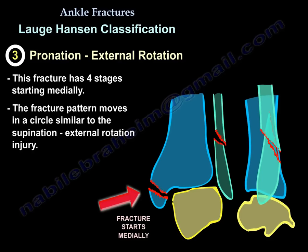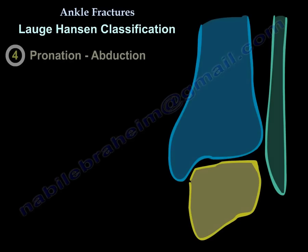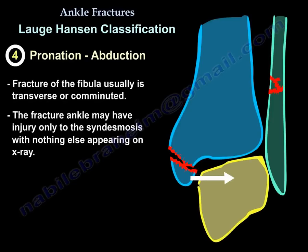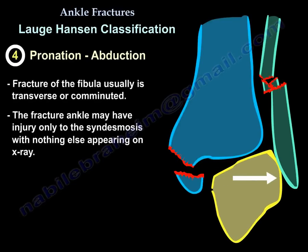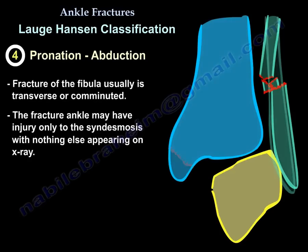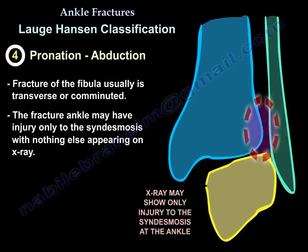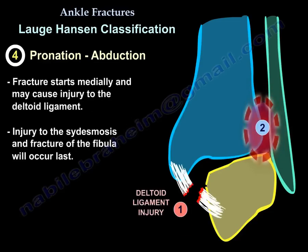The fourth type is pronation-abduction injury. The fibular fracture is usually transverse or comminuted, and the ankle may have only a syndesmotic injury with nothing else appearing on X-ray. This injury starts medially with deltoid involvement, then progresses to syndesmotic injury, and ends with the fibula. In some cases the fibular fracture never occurs, so you may see only a syndesmotic injury.